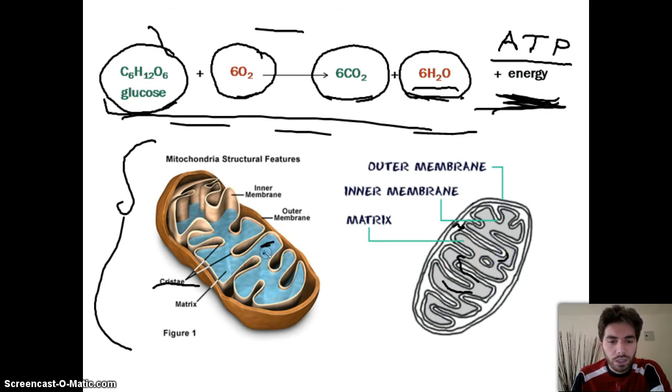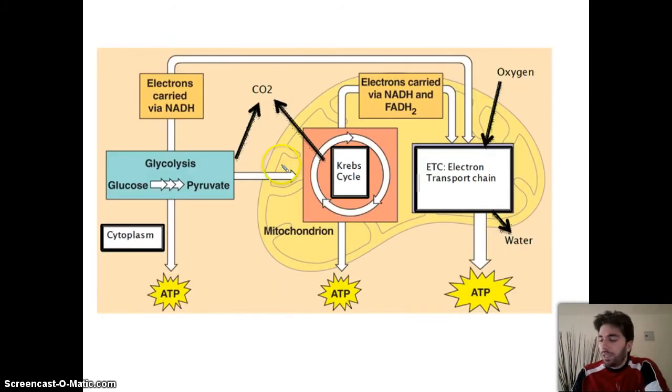This blue fluid that they showed here, that's the matrix. Some of the steps happen in the matrix, some happen in the folds in the inner membrane, and some steps in cell respiration happen in the cytoplasm outside. Cellular respiration happens in three to four steps. In the overview I'll talk about three steps. In the details video I'll talk about the fourth step, which lies between these two, called link reaction.